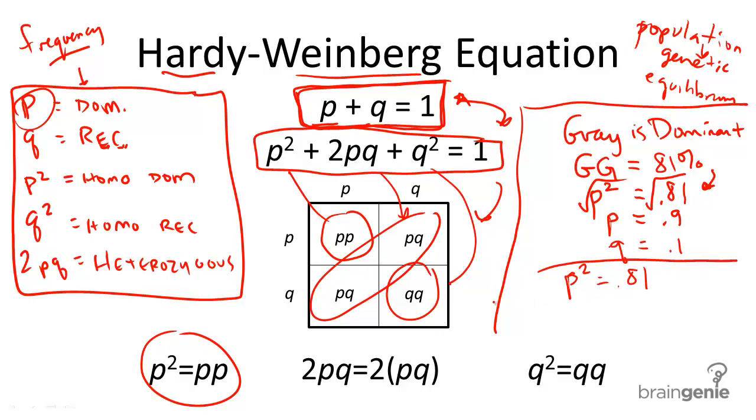We know if a heterozygous individual is 2pq, or 2 times p times q. Do we have those variables? Yes. So, a heterozygous individual is going to be 2 times 0.9 times 0.1, or equal to 0.18. So, 2pq is equal to 0.18.